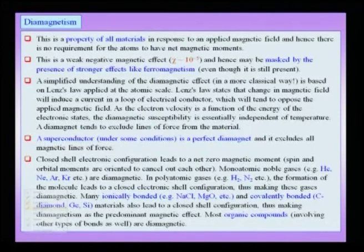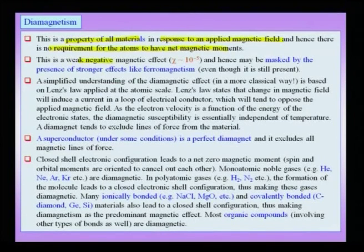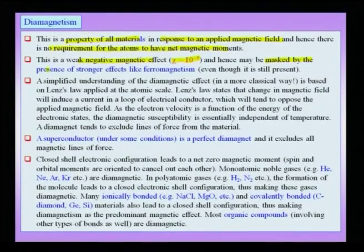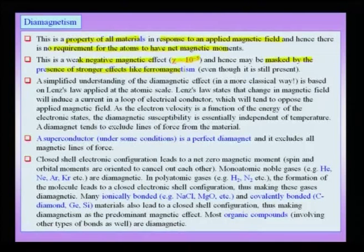Diamagnetism is a property of all materials — ubiquitous and arising as a response to an externally applied magnetic field. There is no requirement for atoms to have any net magnetic moment. This is a weak negative magnetic effect: the susceptibility is negative and of the order of 10⁻⁵. It is usually masked by stronger effects like ferromagnetism, though the underlying diamagnetic effect is always present.